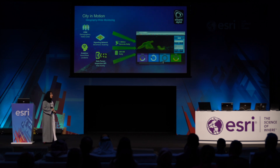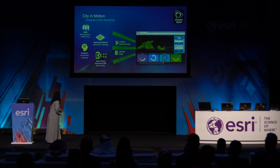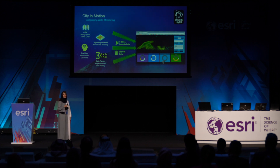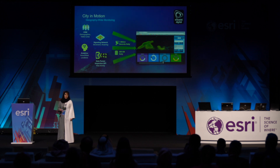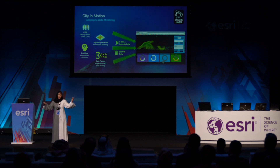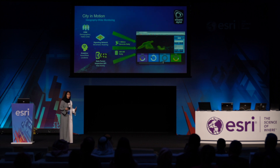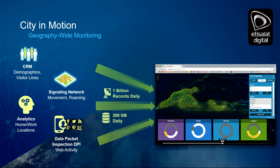The application has so many use cases, but today we've concentrated on one — what we call the population density use case. In there, we use lots of data coming from our CRM: demographic data related to gender, age group, nationality, and so on. We also provide our cellular data, or signaling data — where cell towers track mobility and location, how people move. We also ingest our data models related to home location and work location, and we can determine male or female based on calling patterns.